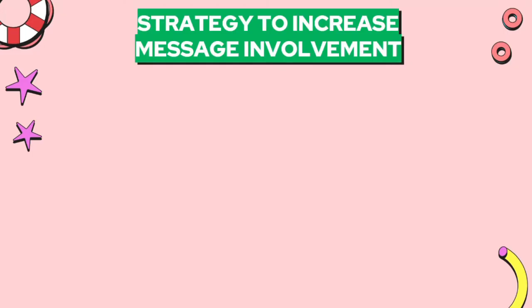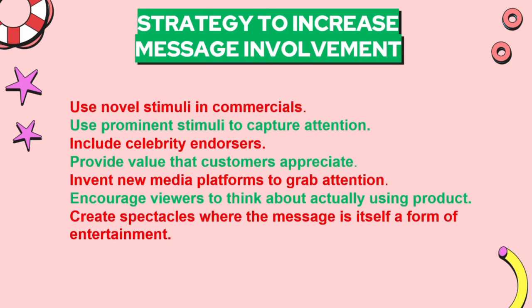Some messages are so involving that they trigger a state of 'narrative transportation,' where people become immersed in the storyline and it's hard to distract them. Strategies to increase message involvement include: use novel stimuli such as unusual cinematography, sudden silences, or unexpected movement in commercials; use prominent stimuli such as loud music and fast action to capture attention; include celebrity endorsers; provide value to the customer; and invent new media platforms to grab attention. You can also encourage viewers to think about actually using the product and create potential when the message itself is a form of entertainment.